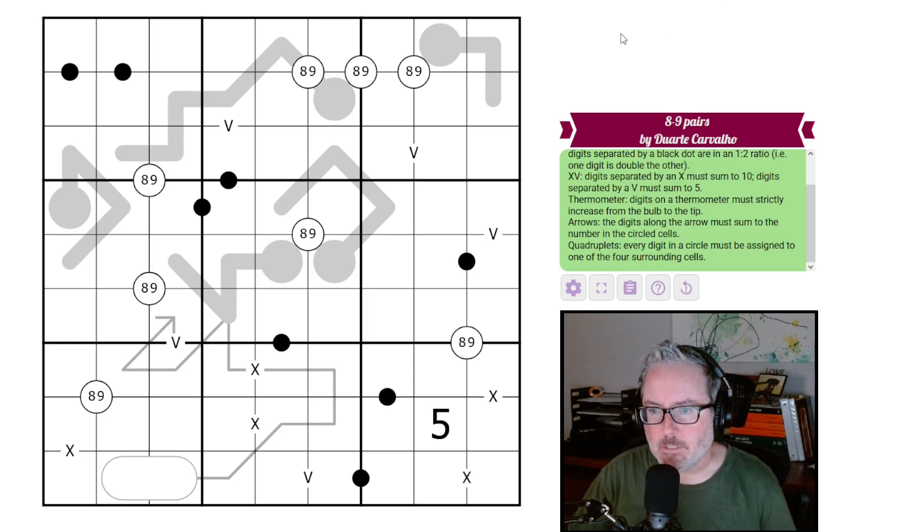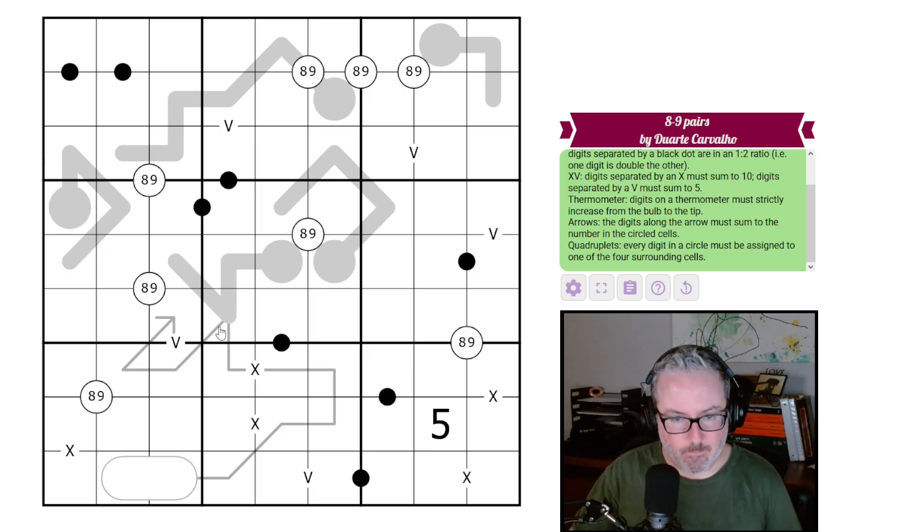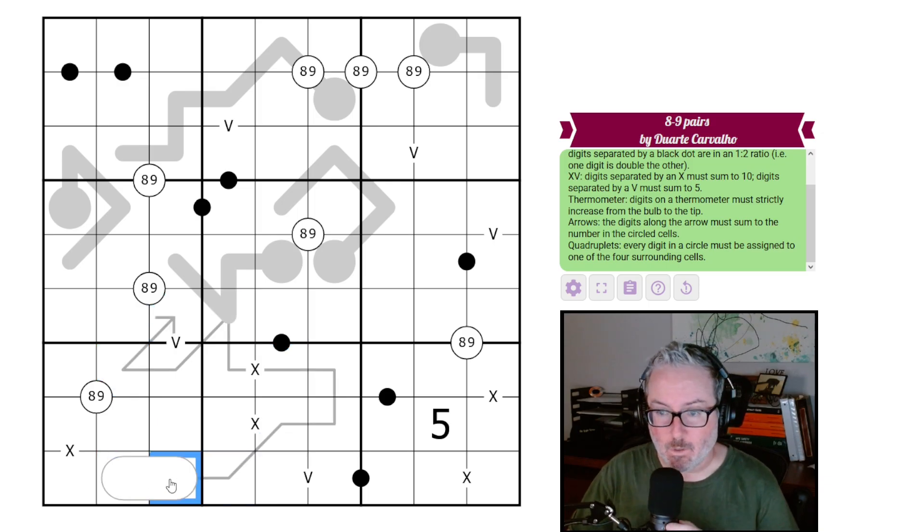Then we have arrows. The digits along the arrow must sum to the number in the circled cells. We've got a pill actually here for this arrow. We don't see 10 to see pills all that often, but all of these digits are going to add to something. That will be put here where this is the tens digit and this is the ones digit.